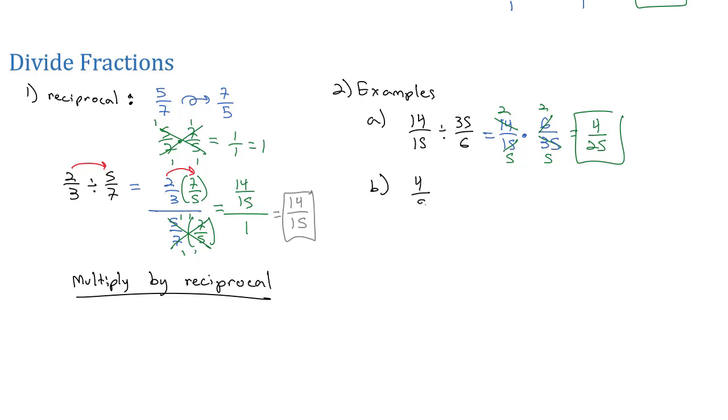Let's try 4 ninths divided by the whole number of 14. Well, we can make that 14 a fraction by putting it over 1, and we know we never divide. We just multiply by the reciprocal. So, instead of dividing, we're multiplying,